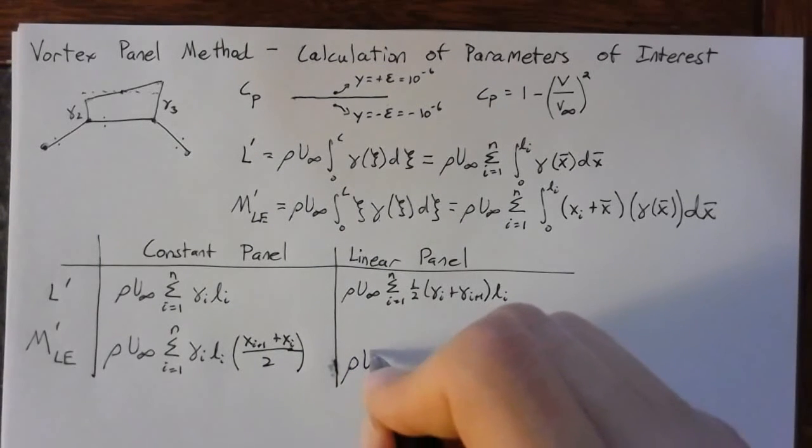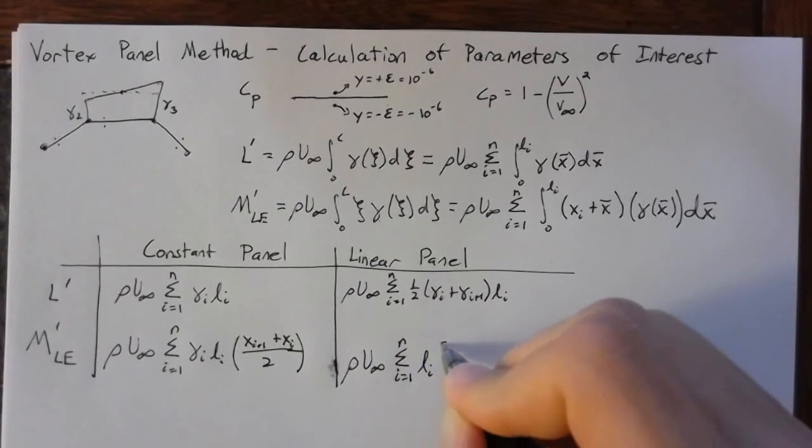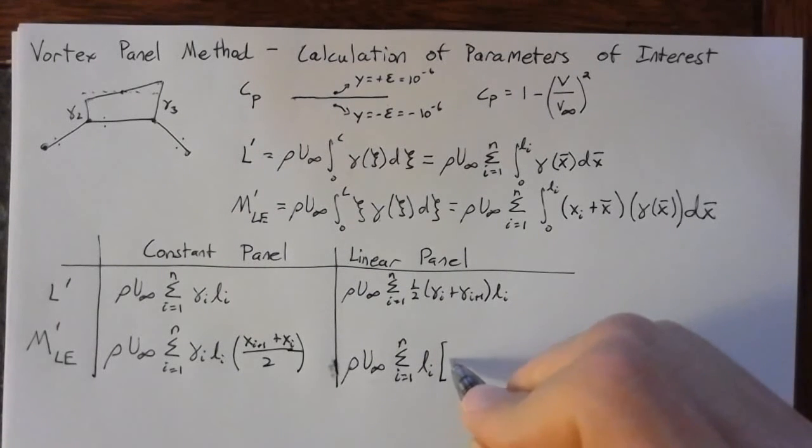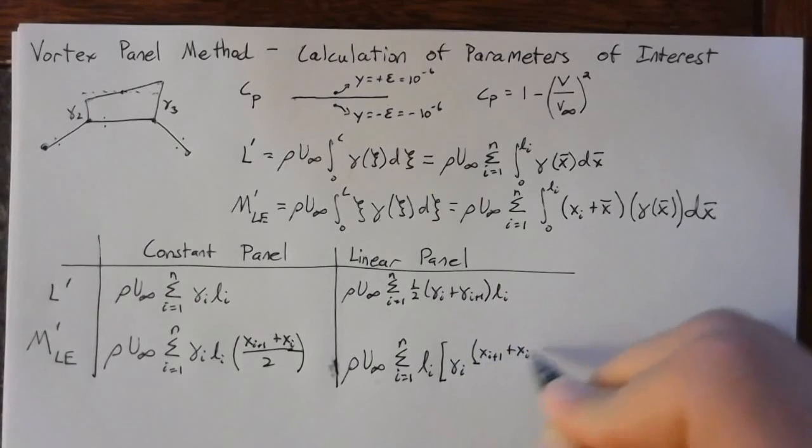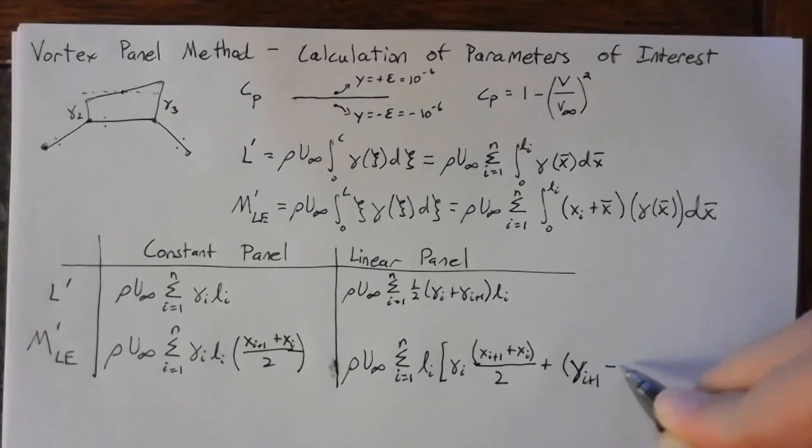For the linear panel, we end up with, once again, we have the sum from i is equal to 1 to n. And then I'm going to take this Li out front and then have quite a bit to multiply by. So we're still going to have the same term from our constant panel. So this will be gamma of i, x sub i plus 1 plus x sub i, all that over 2. And then we're going to have an additional contribution based on the variation. So this is going to be a gamma of i plus 1 minus a gamma of i. And this will be multiplied by a slightly different moment arm. So this will be x of i plus 2x of i plus 1, and all that over 6.